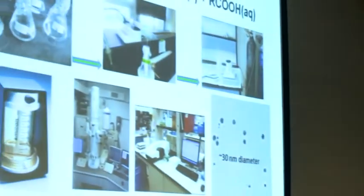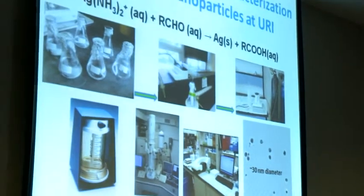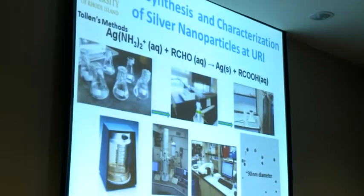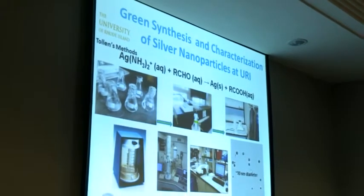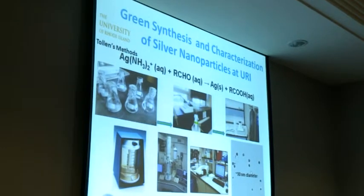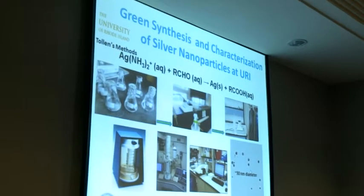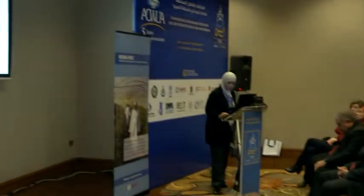The University of Rhode Island is using a green technology method called Tollens' method — very well-developed, producing very nice nanoparticles of 39 nanometers, dispersed particles with very nice shape. We then thought about preparing our own using our natural materials. We started testing different materials — we used rosemary and olive leaf — thinking we would improve the technology that Rhode Island is using.